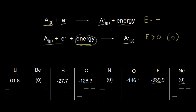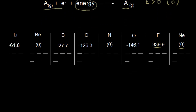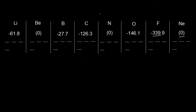Now that we've reviewed what these numbers mean, let's think about the trend for a period. We'll start with the value for boron. Boron gives off 27.7 kilojoules per mole of energy when you add an electron to the neutral atom. When you go over to carbon, that number has increased a little bit — carbon gives off even more energy. And when we go to oxygen, it gives off even more energy. And finally, fluorine gives off the most out of those. So there is a general trend: as you move to the right, there is more energy being given off, and therefore a greater affinity for that electron — there's an increase in electron affinity across a period.